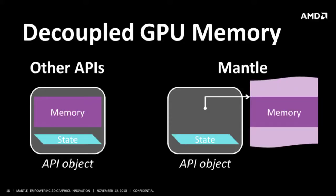Memory management is another problem in current APIs. When you create an object — a texture, shader, or whatever — the driver will implicitly allocate GPU memory for you, and that memory is forever linked to that object. There are a number of problems: it's difficult to recycle that memory, you end up with a larger memory footprint, creating resources is more expensive because we're always allocating memory with the resource, and the driver has to manage a lot of OS video memory handles.